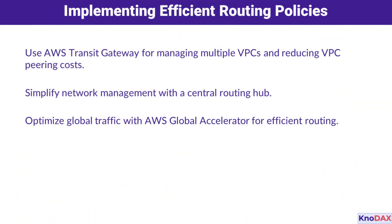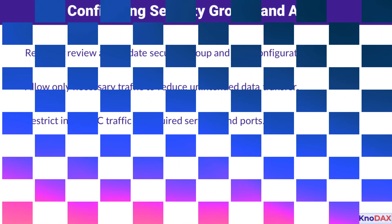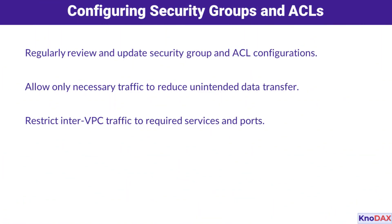Routing policies play a huge role in network efficiency. AWS Transit Gateway is great for managing multiple VPCs while cutting down on VPC peering costs. For global traffic optimization, AWS Global Accelerator can enhance performance by routing traffic to the most efficient endpoints. Together, these tools simplify network management and improve routing efficiency.